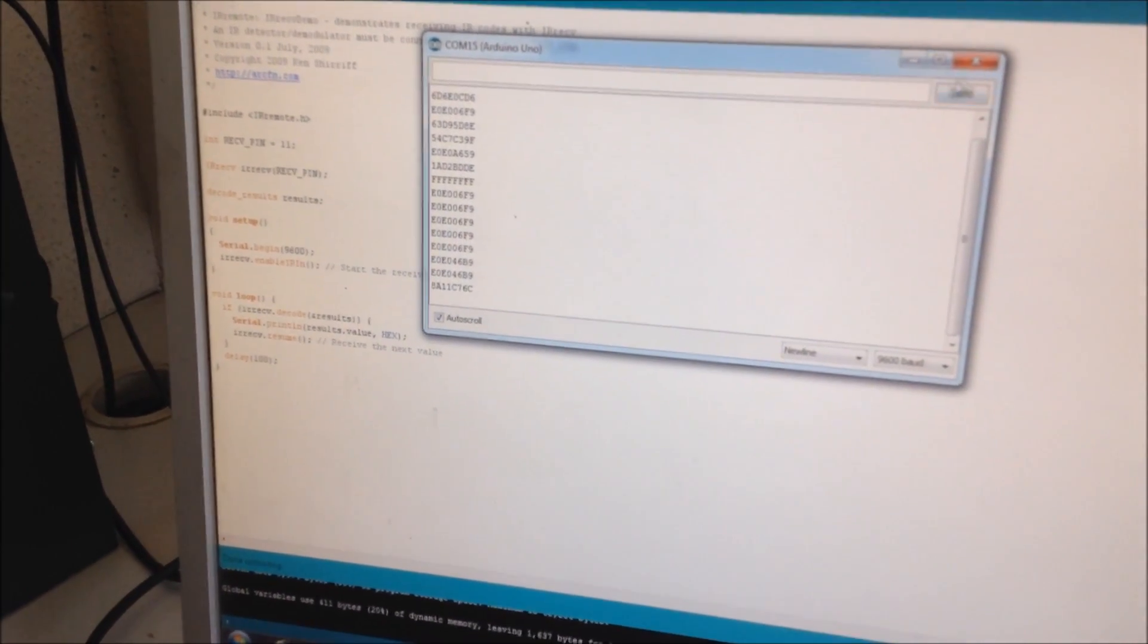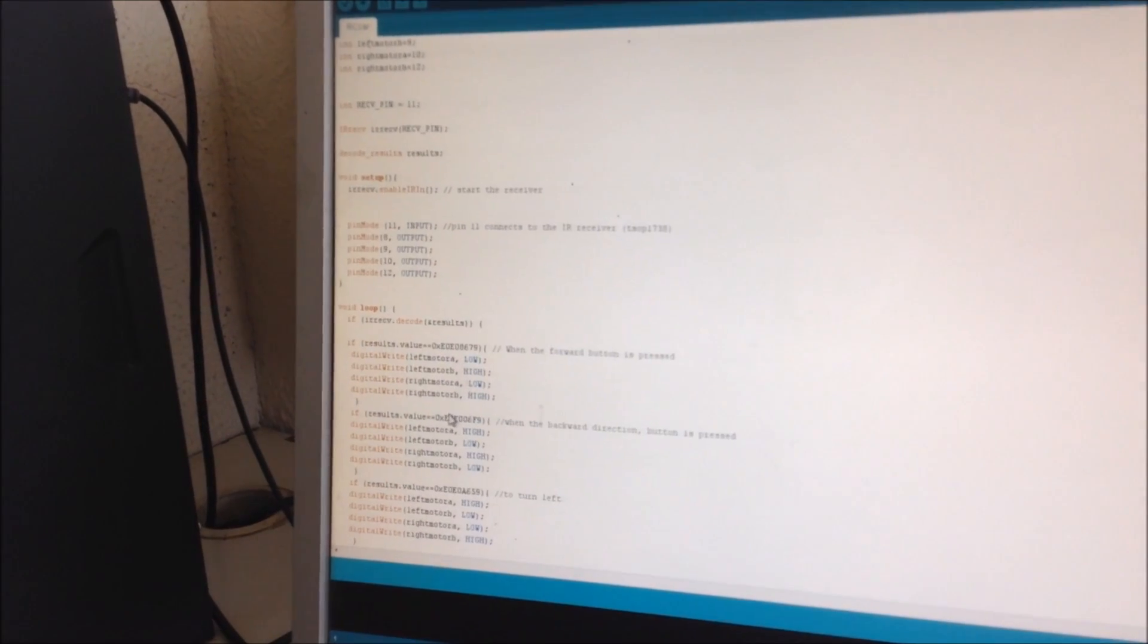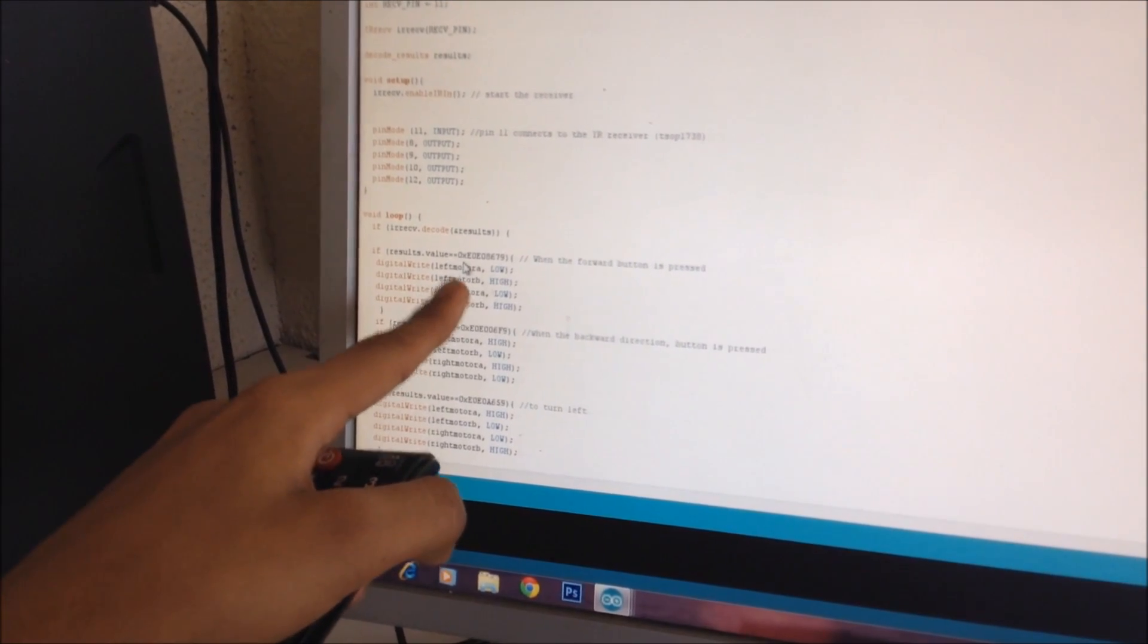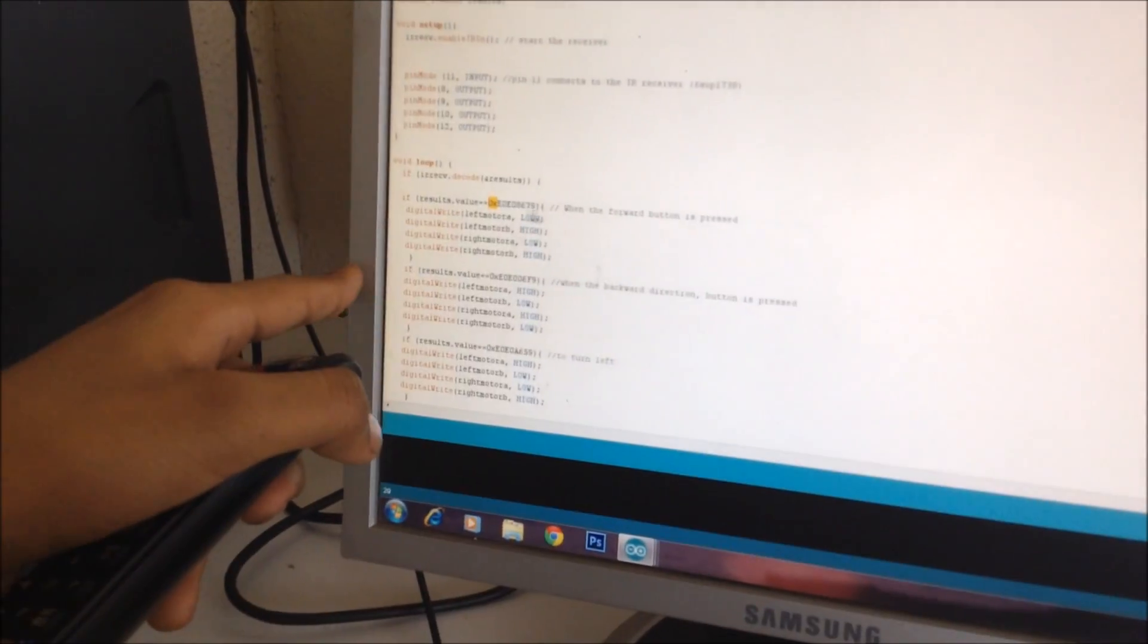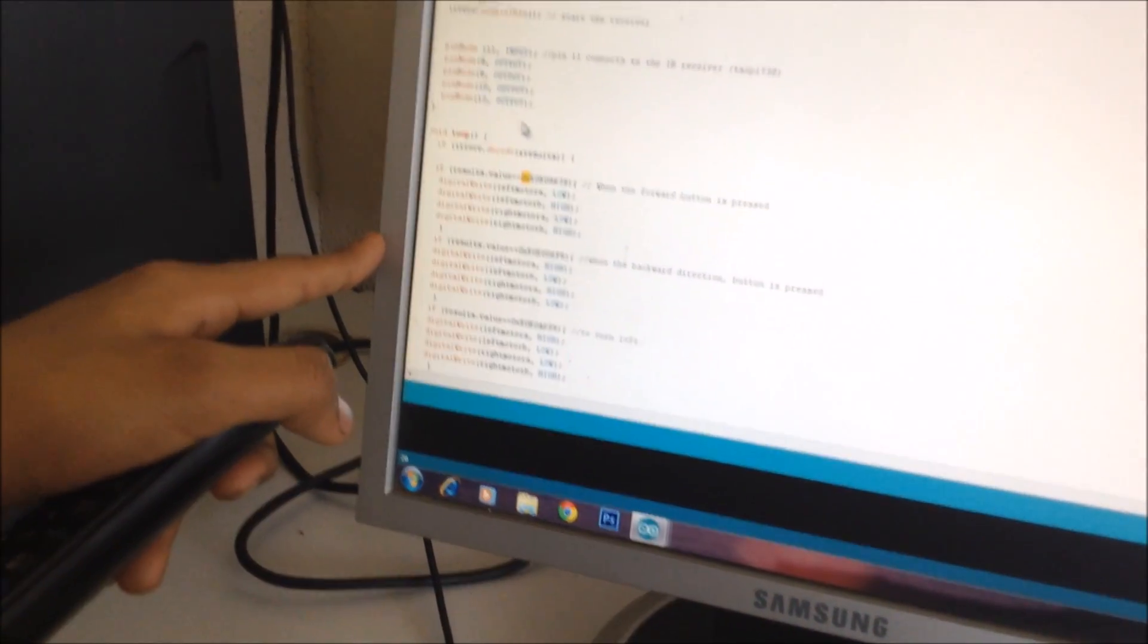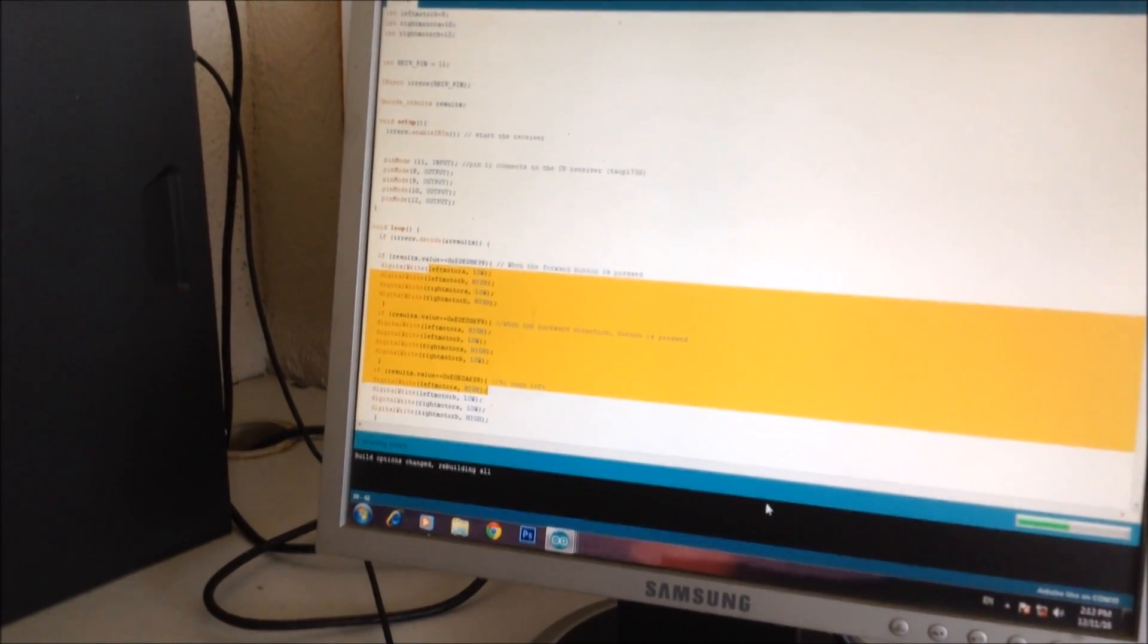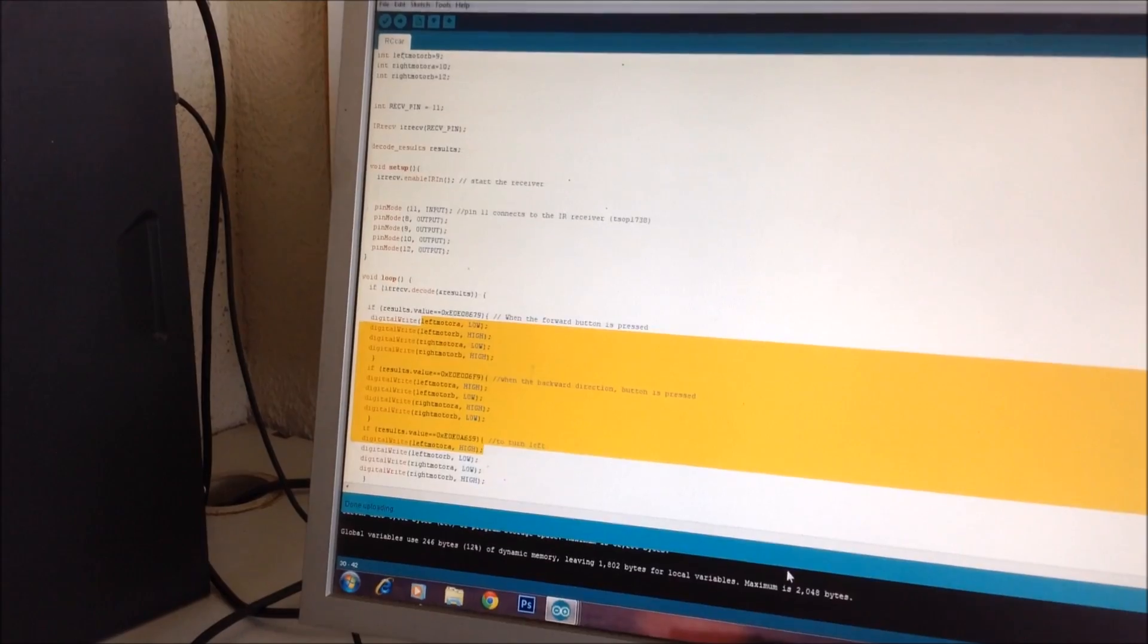So like I have this value here. I will be putting it in the main code right here. Right here. So this is the backward button. And you have to do this for everything. And make sure you have this 0x right here, or else it won't work. 0x is to specify that the data type in front is a hexadecimal number. And once you're done with this, you can simply upload this code to the Arduino. And it'll work like a charm.